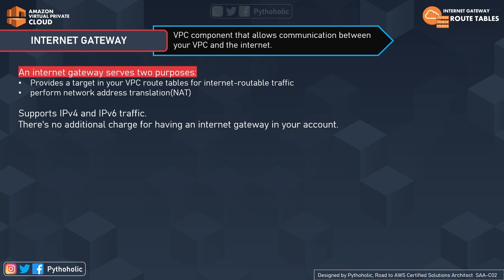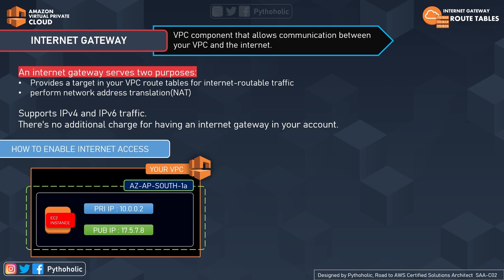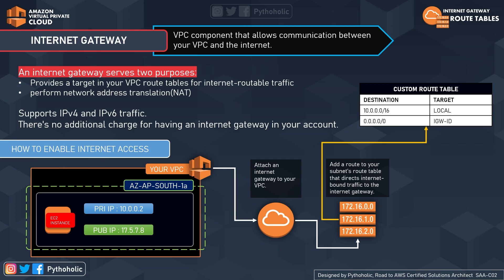That is, unless you have something like a VPN connection or a Direct Connect to your on-premise office. To enable internet access, here is our VPC with a subnet in our availability zone that has an EC2 instance needing internet access and visibility from the outside world. The first step is to create an internet gateway and a route table for the subnet. But even before that, we need to ensure our instances have a globally unique IP address — either a public IPv4 address, elastic IP address, or IPv6 address.